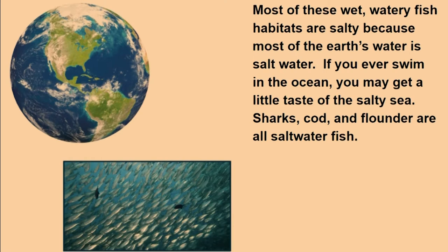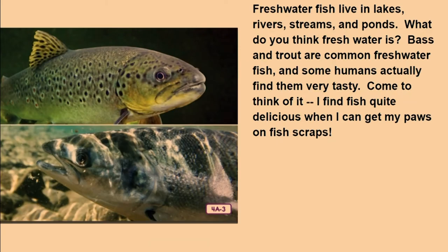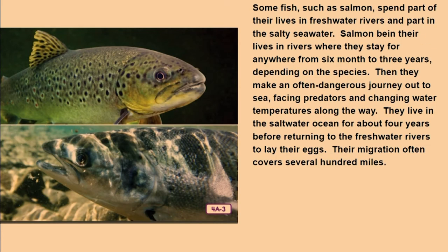Most of these wet, watery fish habitats are salty because most of the Earth's water is saltwater. If you ever swim in the ocean, you may get a little taste of the salty sea. Sharks, cod, and flounder are all saltwater fish. Freshwater fish live in lakes, rivers, streams, and ponds. Bass and trout are common freshwater fish. Some fish, such as salmon, spend part of their lives in freshwater rivers and part in the salty seawater.